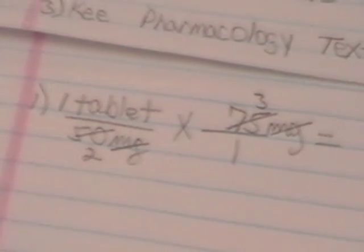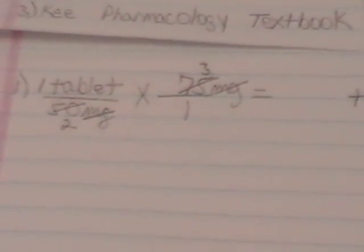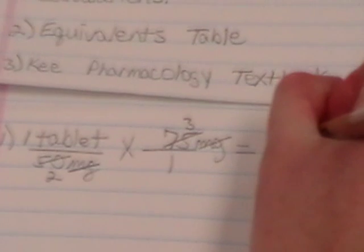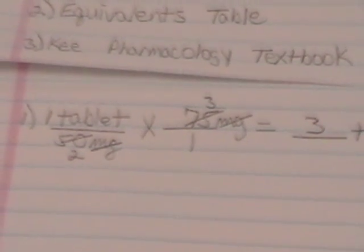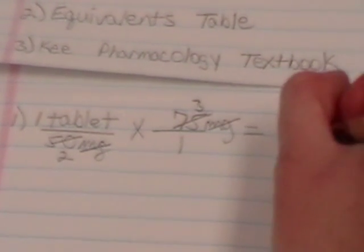Notice that these will reduce down. 25 will go into 50, 2 times. 25 will go into 75, 3 times. So then we just have to multiply across our numerator, 1 times 3 is 3. And multiply across our denominator, 2 times 1 is 2.